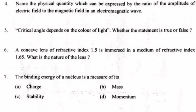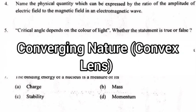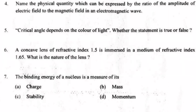Question 6: A concave lens of refractive index 1.5 is immersed in a medium of refractive index 1.65. What is the nature of the lens? Answer: Converging nature, or convex lens.